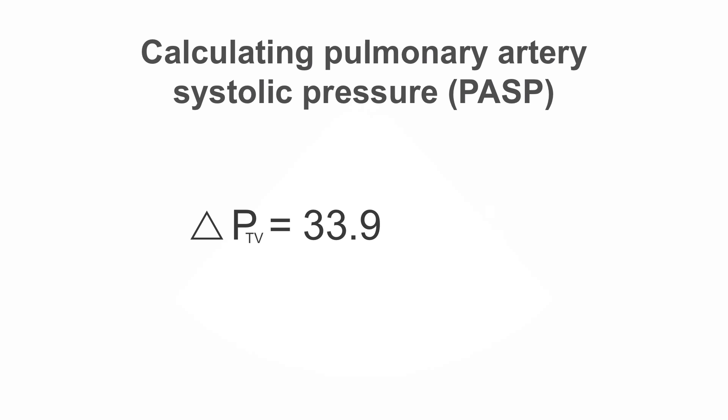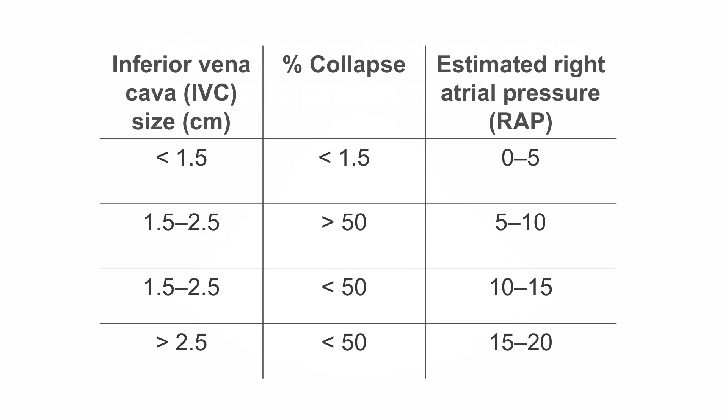Next, we need to add the pressure contribution from the right atrium to complete our calculation with the modified Bernoulli equation. We can estimate the right atrial pressure using the inferior vena cava, or IVC. There is a standard table that allows us to predict the approximate right atrial pressure based on the IVC size and collapsibility.